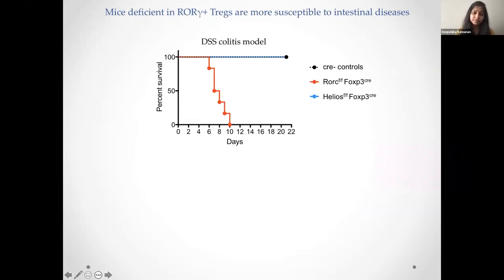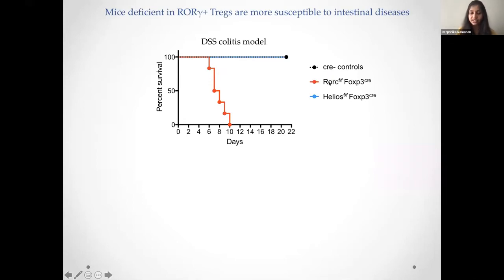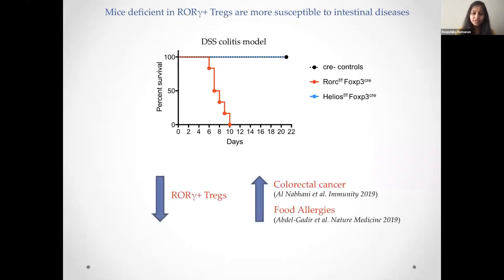When we treated the mice with this chemical, we found that mice deficient in RORγ Tregs, shown here in red, were a lot more susceptible — in fact, they were dying by 10 days after treatment — compared to mice deficient in Helios-positive Tregs or the Cre-negative controls. This suggests RORγ Tregs are really important in preventing intestinal inflammation. Other groups also showed that mice deficient in RORγ Tregs were more likely to develop colorectal cancer and food allergies.